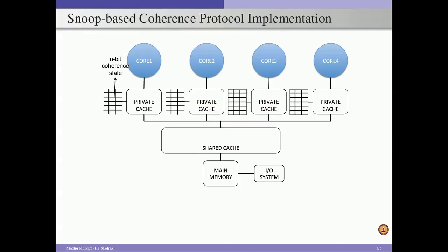In this module we are going to discuss cache coherency protocol design for SNOOP-based systems as well as directory-based systems. We also discuss, as a case study, a three-state invalidation-based protocol. We start with the SNOOP-based design.